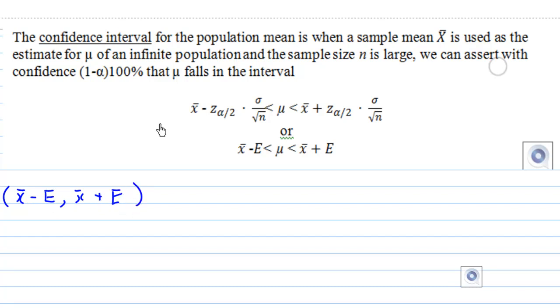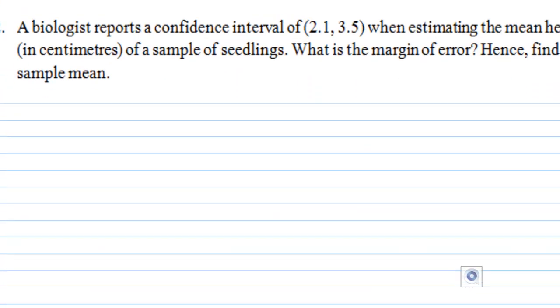In our case, this interval is 2.1 and 3.5. So that means x bar minus e is 2.1, and x bar plus e is 3.5.